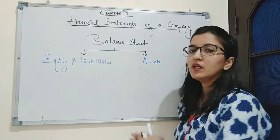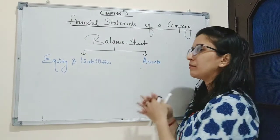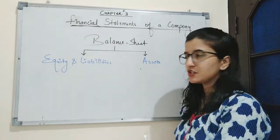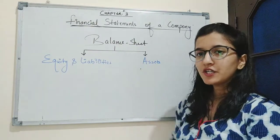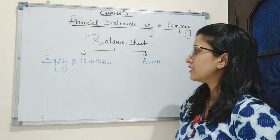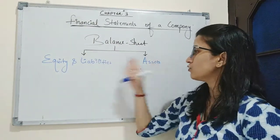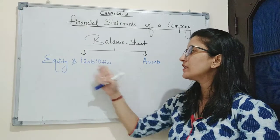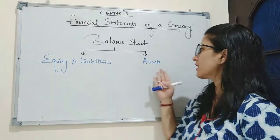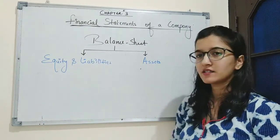In this chapter we will learn how to prepare a balance sheet. The balance sheet of a company is divided into two parts: first is equity and liabilities, and second is assets.